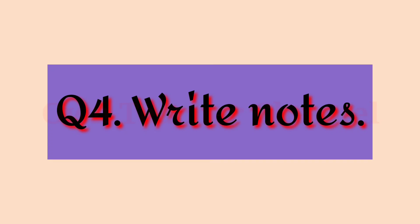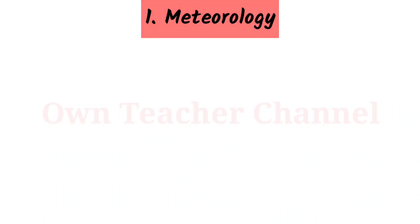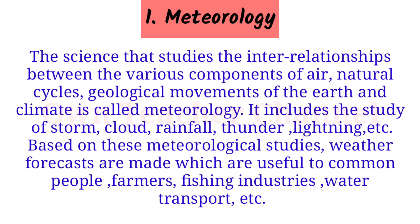Question 4: Write Notes. 1. Meteorology: The science that studies the interrelationship between the various components of air, natural cycles, geological movements of the earth and climate is called meteorology. It includes the study of storm, clouds, rainfall, thunder, lightning, etc. Based on these meteorological studies, weather forecasts are made which are useful to common people, farmers, fishing industries, water transport, etc.